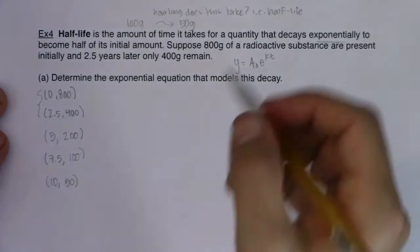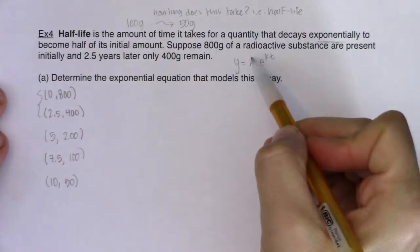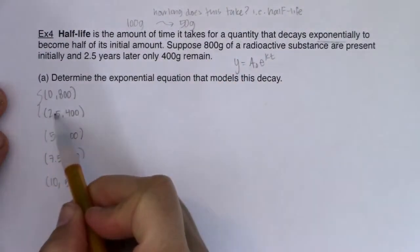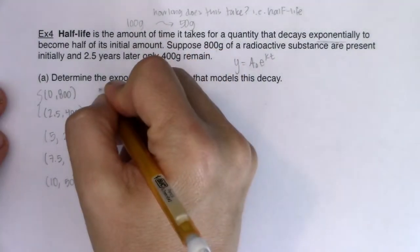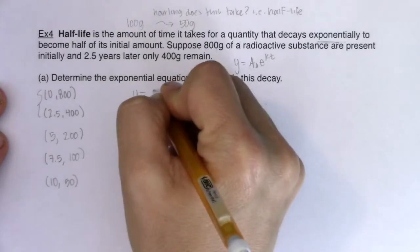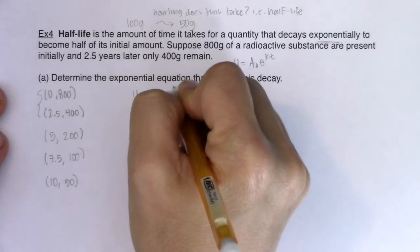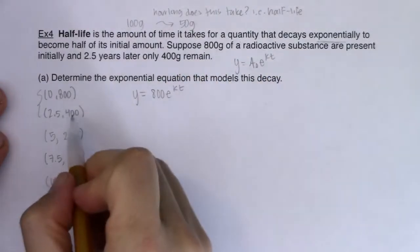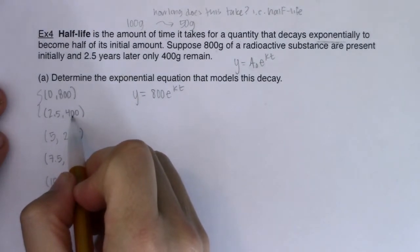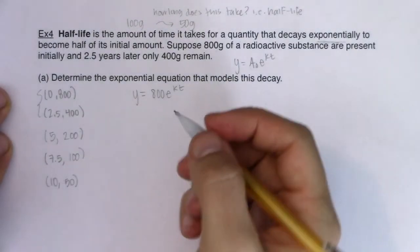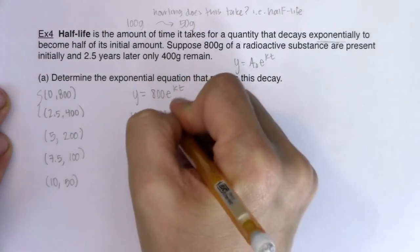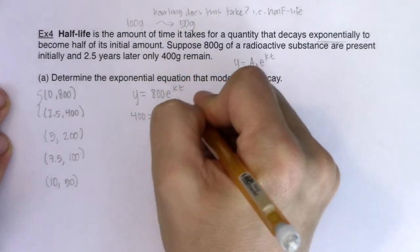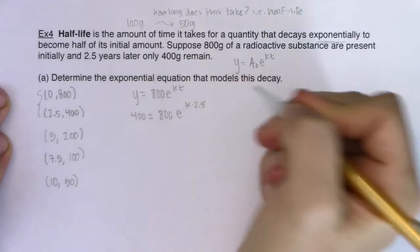Now, if this is my initial amount, that's going to be my a naught value. Then I'll use this next ordered pair to solve for k, and then I'll have that model. So I know y is equal to 800 e to the kt. Let me plug 400 in for y, 2.5 in for t. So we will get 400 equaling 800 e to the k times 2.5.